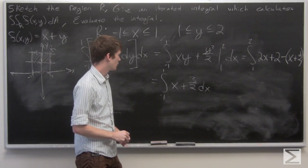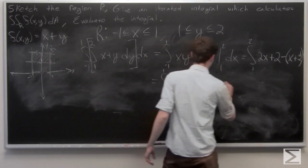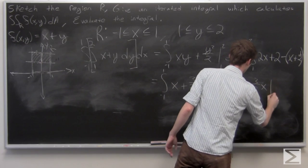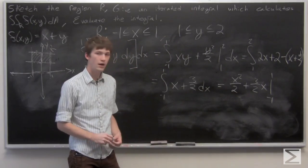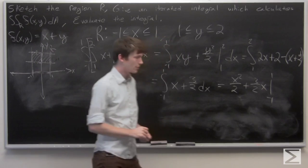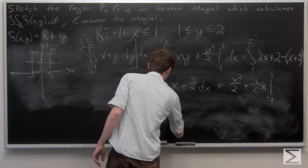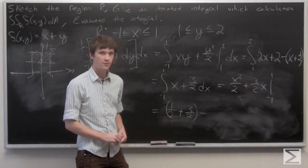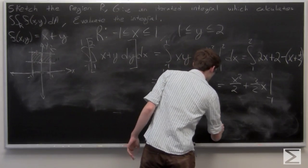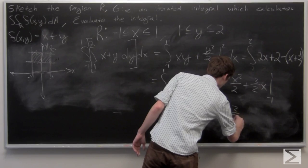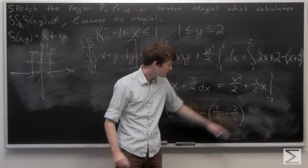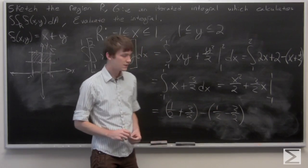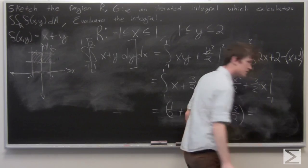Now we calculate the outer integral in the normal way: the integral of x is x squared over 2, plus three halves x. We evaluate that from negative 1 to 1. When x is 1 we get one half plus three halves, minus the quantity one half minus three halves. So one half minus one half is 0, and three halves minus negative three halves is six halves, which is 3.